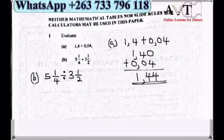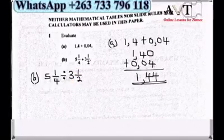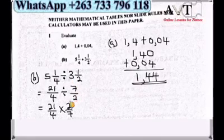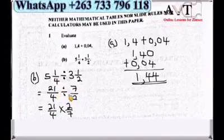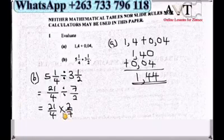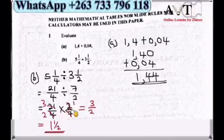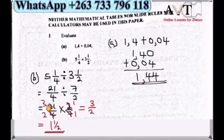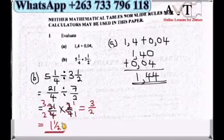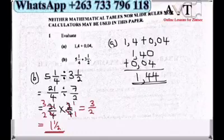Part B: 5 and a quarter divided by 3 and a half. We convert to improper fractions: 21 over 4 divided by 7 over 2. We multiply by the inverse, giving 21 over 4 times 2 over 7. Cross dividing: 2 into 2 is 1, 2 into 4 is 2, 7 into 7 is 1, 7 into 21 is 3. This gives 3 over 2, which is 1 and a half as a mixed fraction.